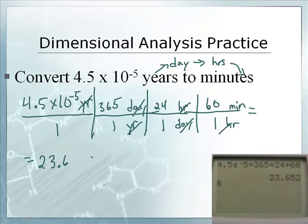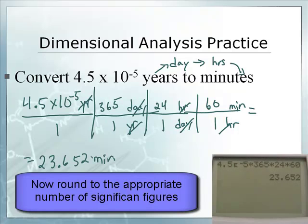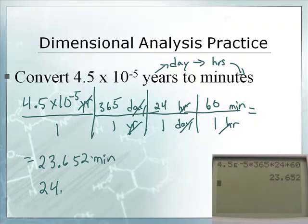23.652 is our calculator answer. So that would be minutes. Now is that the correct answer? We want two sig figs, so we're going to call that 24 minutes.